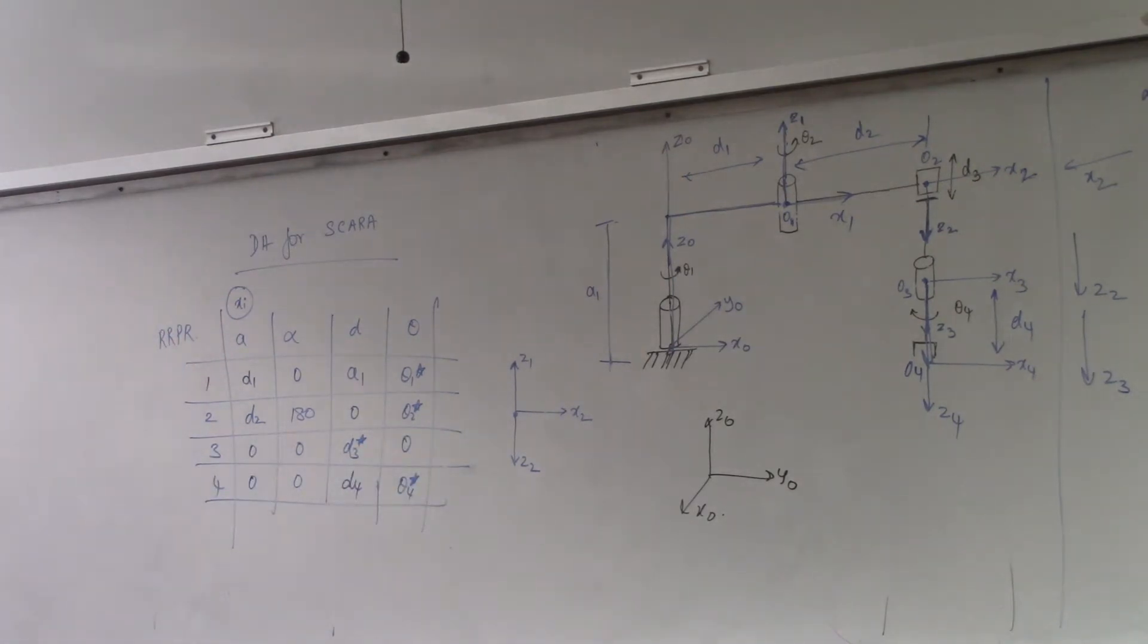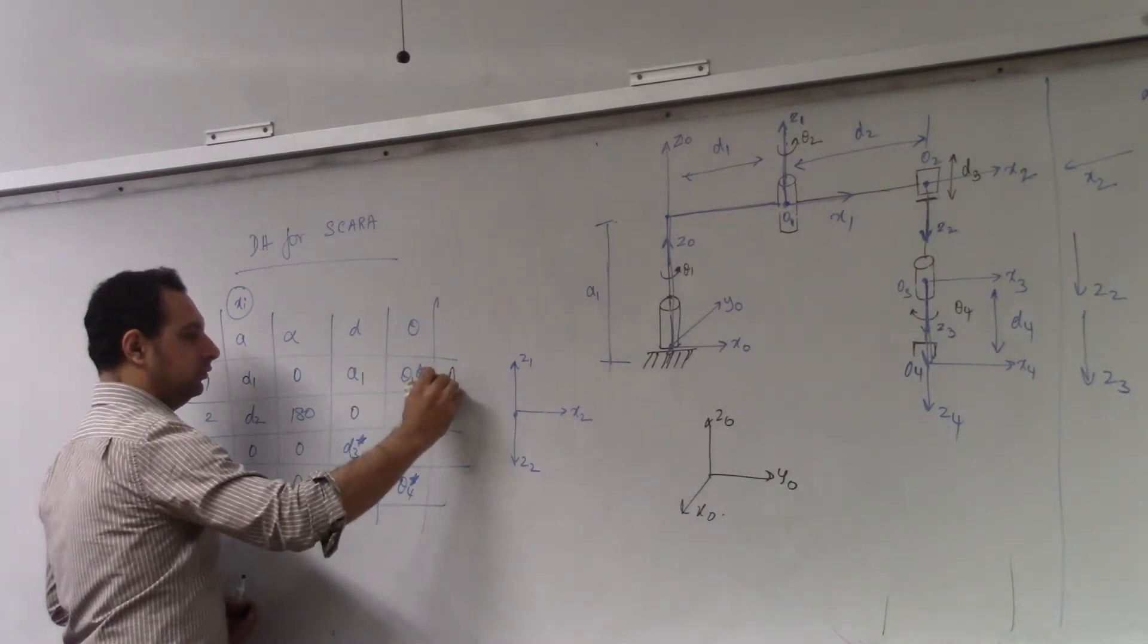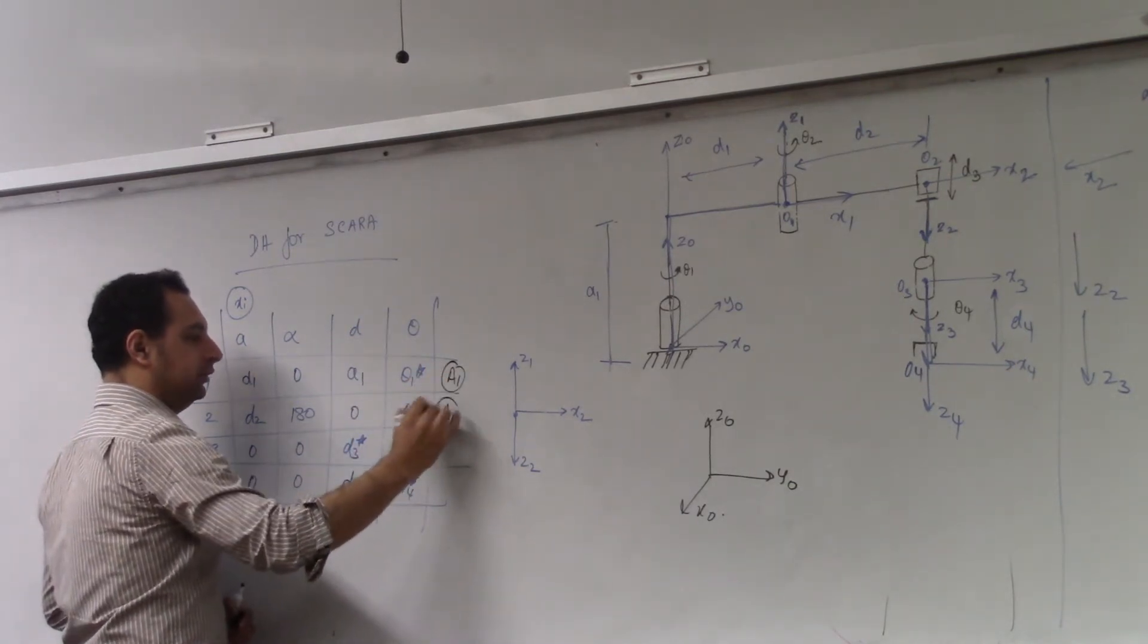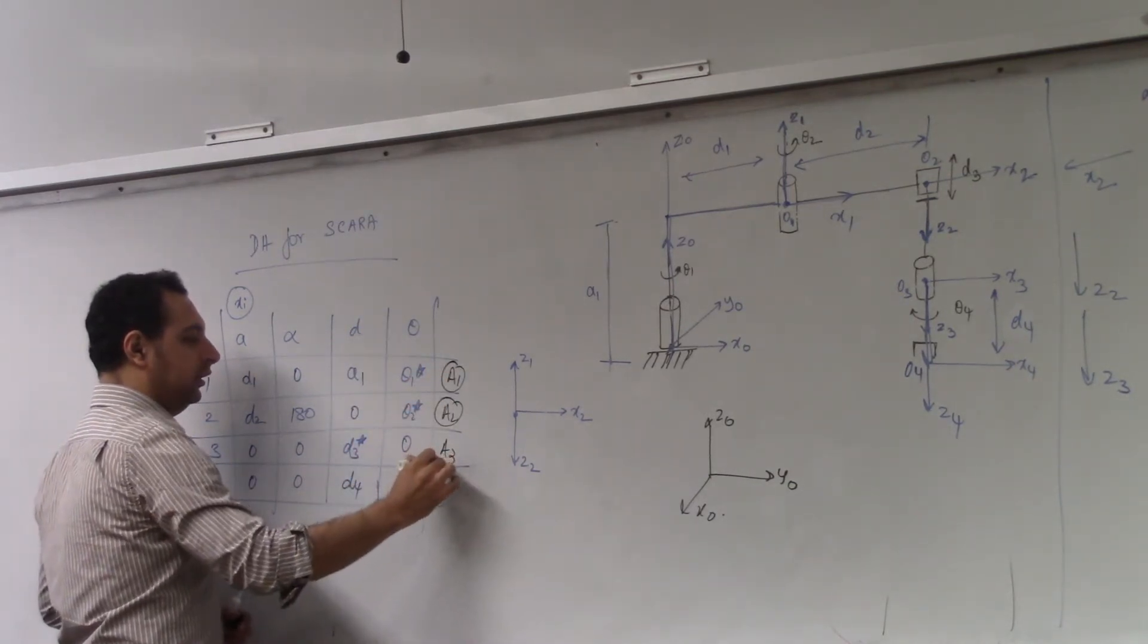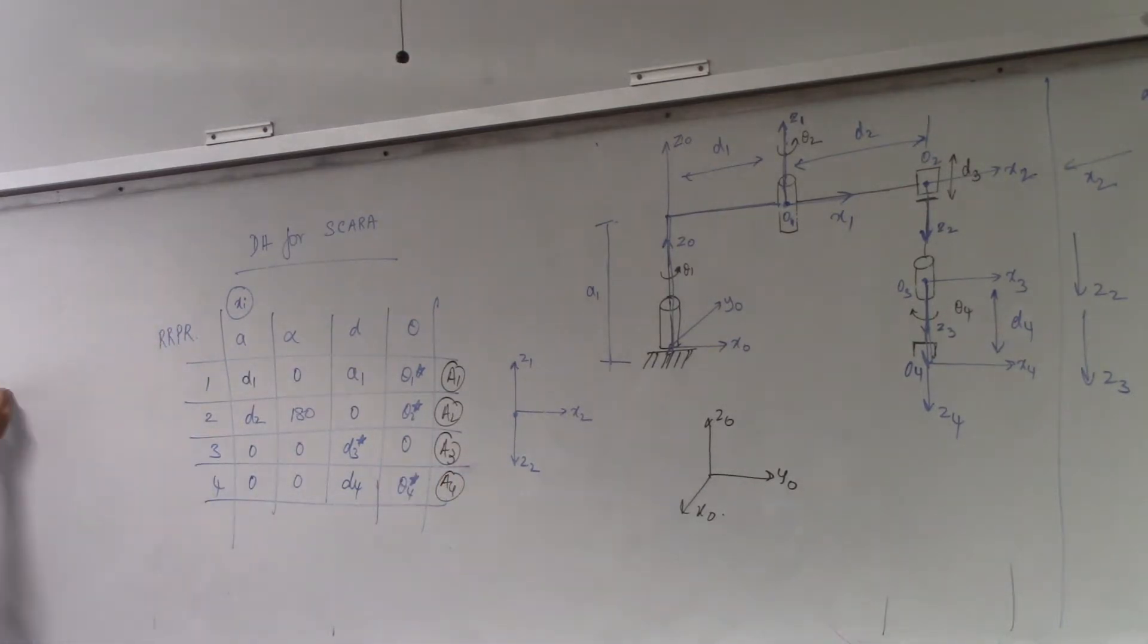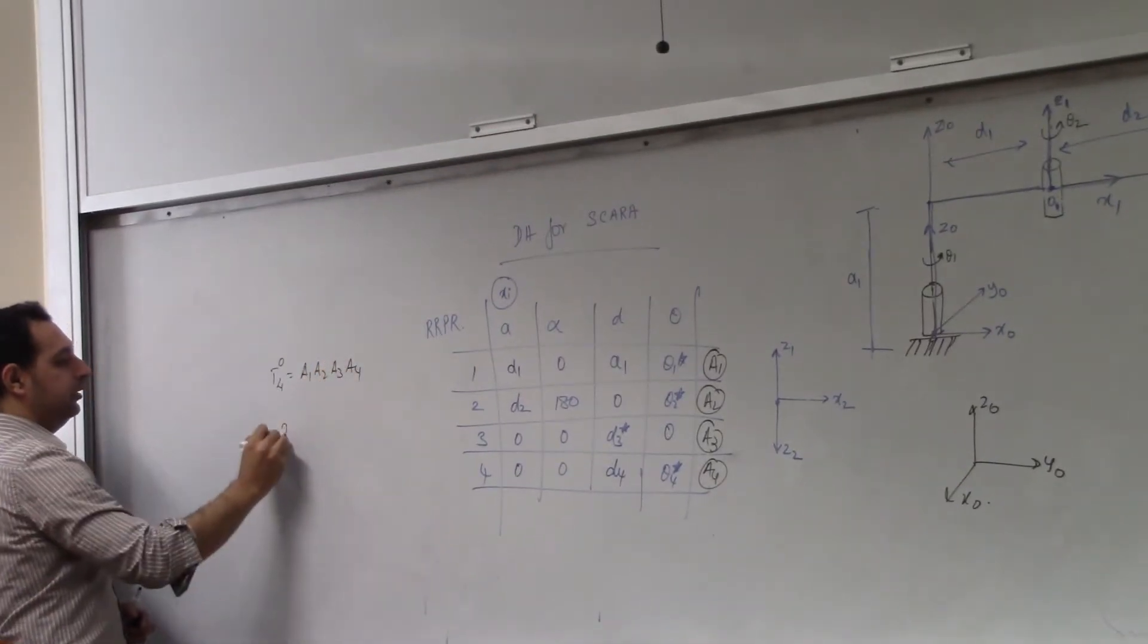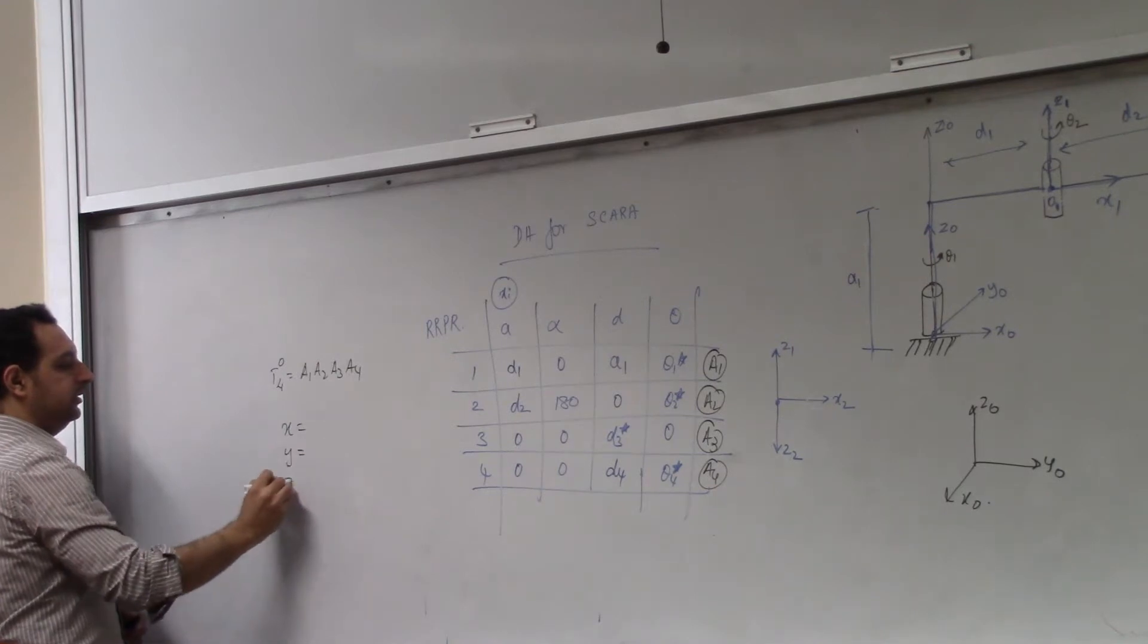Okay. So from here, you will construct. You will use this to construct your A1, A2, A3, and U, D4. Okay. So you will come up with D04. And you will tell me what is X, Y, and Z.